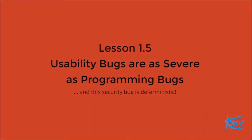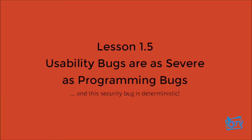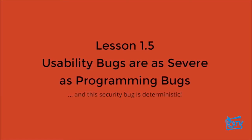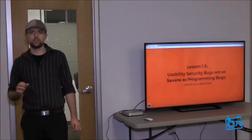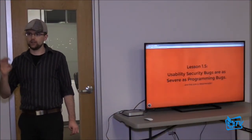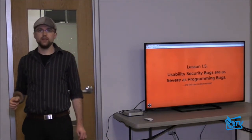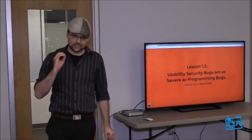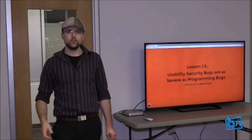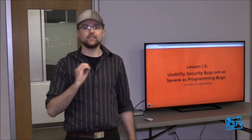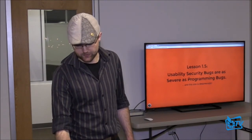So this is lesson 1.5: usability security bugs are as severe as programming security bugs. And this one in particular is nearly deterministic. If I'm able to get you onto my connection, I will be able to get your login password without having to compromise a CA whatsoever. Anyone — your network admin in your office, whoever is running your router at home — can have your passwords. I can take a Wi-Fi router, give it the same name, drop it closer to your location, and have all your passwords. It's that simple.